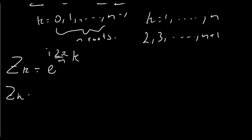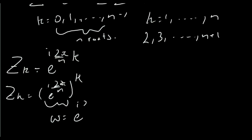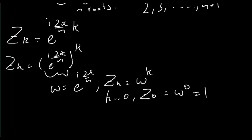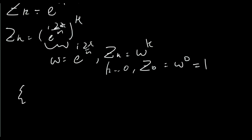We can write this in an even better way by noticing that zk is equal to e to the i 2π over n, raised to the power of k. So we let omega equal e to the i 2π over n, and then write that zk is equal to omega to the k. We can get each root of unity by taking successive powers of omega. Since k starts at 0, our first root z0 equals omega to the 0, which equals 1. So the roots always start with 1, and we'd list them as 1, e to the i 2π over n (the k equals 1 case), then e to the i 4π over n (k equals 2).